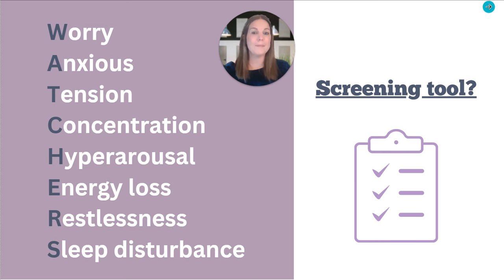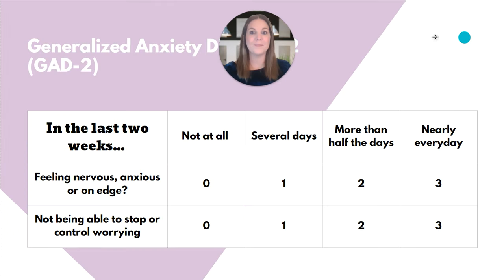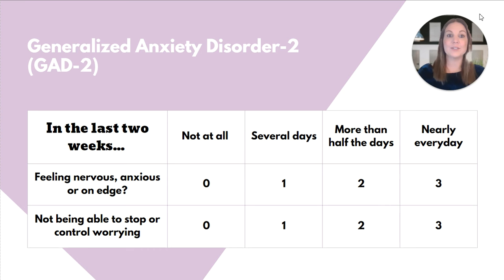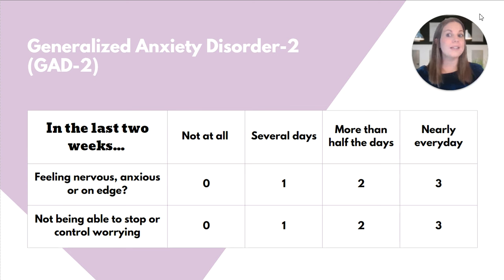A common initial screening tool is the Generalized Anxiety Disorder 2-Item Scale, or the GAD-2. The questionnaire asks the patient to score how often in the last two weeks did they feel nervous, anxious, or on edge, or not be able to control their worry. Each of the two questions are given a numerical score and then totaled. A score of three or more warrants further assessment.